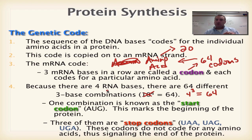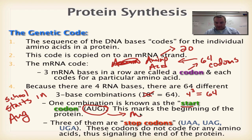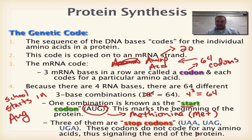Out of these 64 codons, we only need to memorize four of them. The first one is the start codon, and the letters are AUG. A great way to remember this one is: school starts in August. It actually codes for the amino acid called methionine — normally we just use the first three letters, so you're going to see this listed as MET.